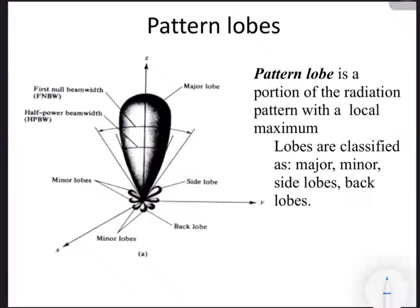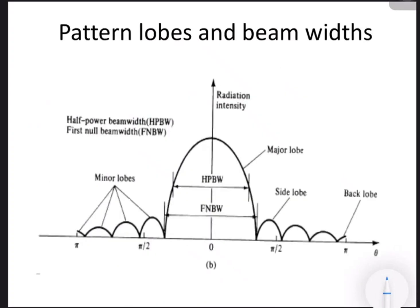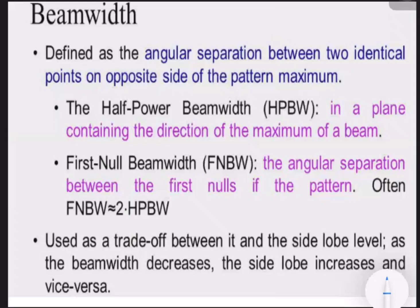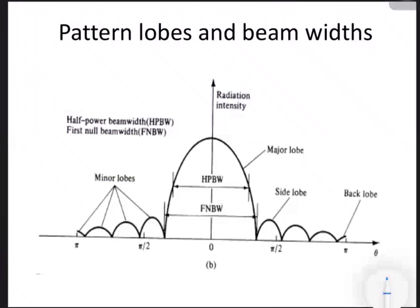The pattern lobe is a portion of the radiation pattern with a local maximum. As explained, there are three lobes: major lobe, minor lobe, side lobes, and back lobes. Pattern lobes and beam width — specifically half-power beam width and first null beam width — can be calculated by the use of the radiation pattern. This is all about the concept of radiation pattern in relevance to antenna.